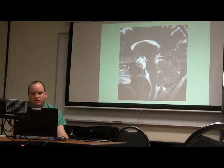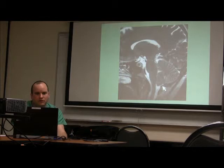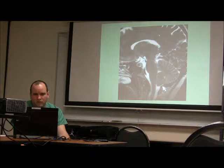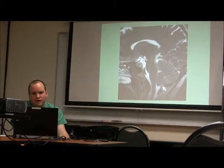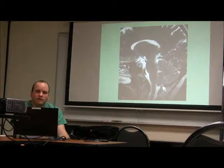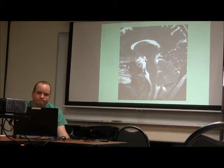It's a sagittal view — cutting down the middle. This right here is the cerebellum, occipital lobe, parietal lobe, frontal lobes. This right here is the corpus callosum. This white stuff right there is spinal fluid, and it's in the frontal horns and occipital horns. This right here is the artery, optic chiasm. This would be the vertebral artery. Behind the nose is a turbinate.